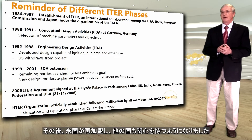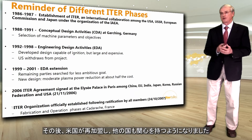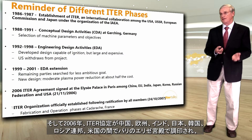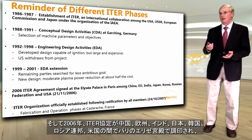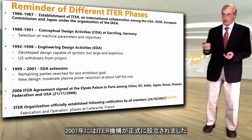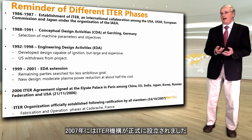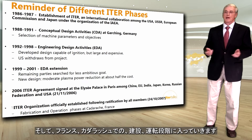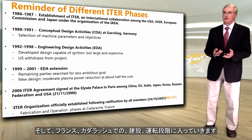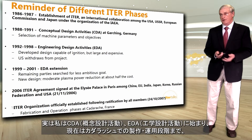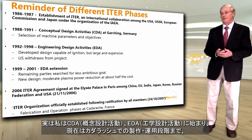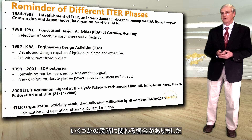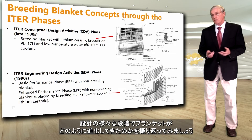The US rejoined and other parties also became interested. In 2006, the ITER agreement was signed at the Élysée Palace in Paris among China, Europe, India, Japan, Korea, the Russian Federation, and the US. The ITER organization was officially established in 2007, and now we are through the fabrication and operation phase at Cadarache, France. I have had the opportunity to be involved in several of these phases, starting with the CDA and EDA and now the fabrication and operation phase in Cadarache.